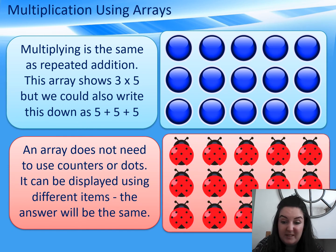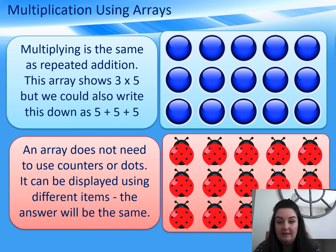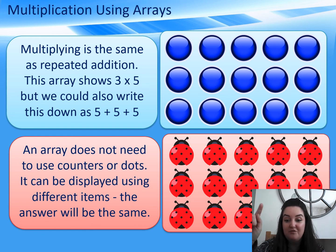And again, like we said before, an array doesn't actually need to be counters or dots, it can be any object, we'd still do exactly the same. There's ladybirds there, there are 3 equal groups of ladybirds, and going across, there's 5 in each group. So, 3 groups of 5, 3 times.